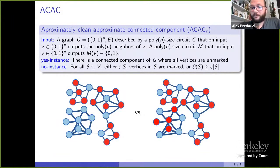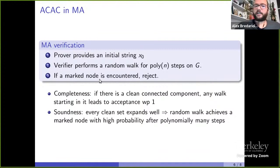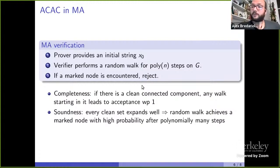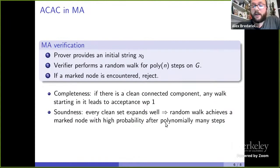For completeness: there exists a vertex in the clean connected component such that the verifier never rejects. For soundness: in no instances, every set of clean vertices expands well, so any random walk from any vertex finds a marked element with high probability. For set CSPs: we extend the assignment notion — instead of a single n-bit Boolean string, the assignment is a set of strings that must satisfy set constraints. A set constraint organizes strings into subsets; for a set to satisfy a set constraint, the projected substrings must appear in one of the allowed subsets, and strings appearing together in the constraint must all appear together in the assignment set.